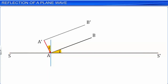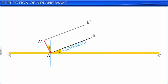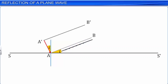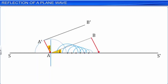The secondary wavelets from points other than A have maximum intensity in the forward direction and zero intensity in the backward direction, and thus they travel in the forward direction. Since the surface SS' is a reflecting surface, the intensity of the secondary wavelets from A is maximum in the backward direction and minimum in the forward direction. Thus, we can say that the secondary wavelets from A propagate back into the same medium. Let us assume that after T seconds, the point B of the wave front AB is incident on the surface SS' at point C. Then BC is equal to VT.